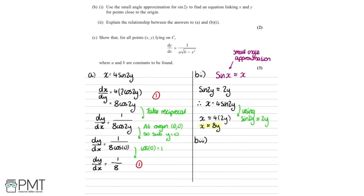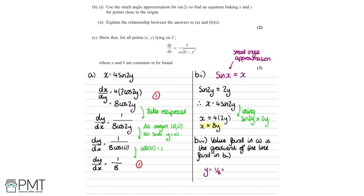For part B2, we need to explain the relationship between the answers to parts A and B1. The value found in part A is the gradient of the line found in part B1. What we found in part A, 1 over 8, is the gradient of this line. If we rearrange x approximately equals 8y to get y equals 1 over 8 times x, we can see the gradient is 1 over 8, so it makes sense.